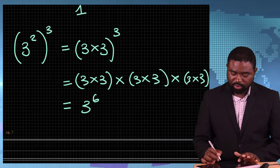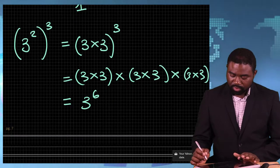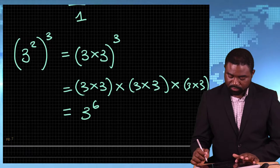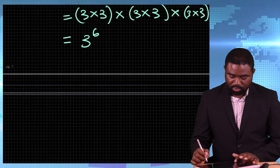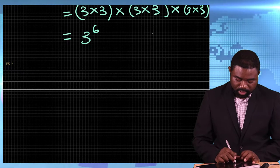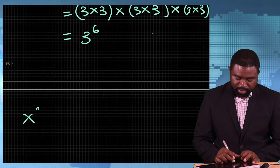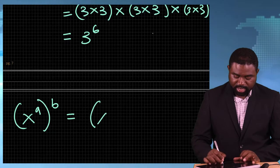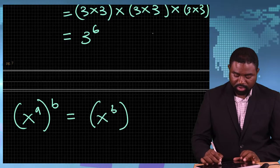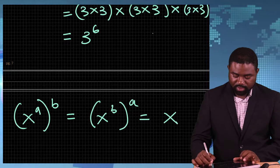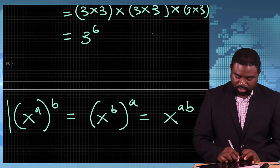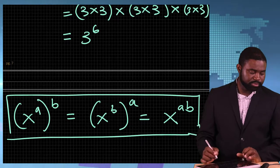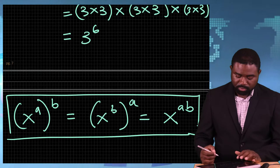So what can we conclude from now henceforth? We can conclude that x raised to the power a, all raised to the power b, is the same as x raised to the power a, all raised to the power b, which is x raised to the power ab. This is Power Law number 3 — very important.